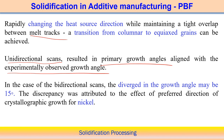Usually the primary growth angle of the solidified grain tries to follow the maximum heat flow direction in the case of unidirectional scanning, as confirmed both experimentally and numerically. But in bidirectional scanning, some divergence in growth angle is observed — around 15 degrees.